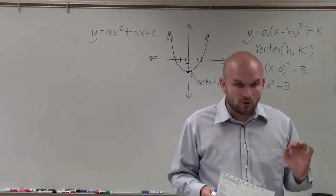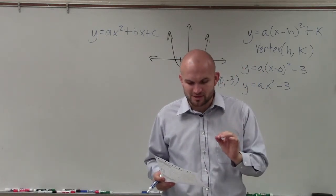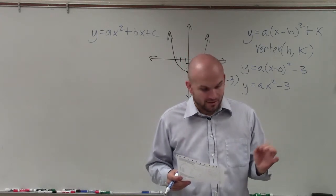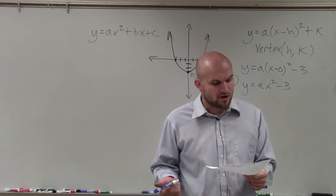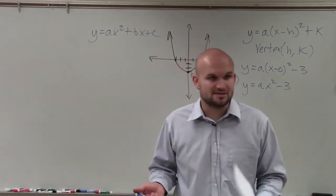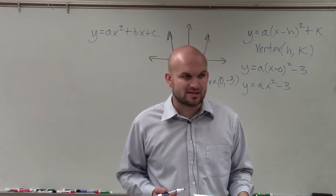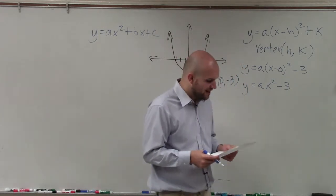I'll continue. So when we look at our two equations, the only equations that have a minus 3 are going to be f and k. So I've already eliminated, ladies and gentlemen, three of those answers. Do you guys see that? Look at your answers. I've already eliminated three of them just because I know what the vertex is. So my vertex is going to be minus 3. So it's either f or k.